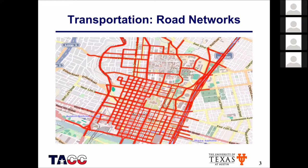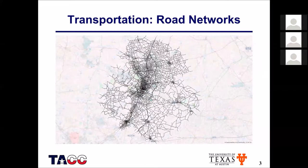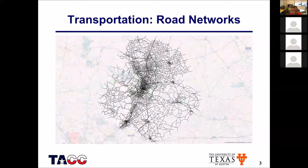This is what it might look like for the downtown Austin region — already fairly complex with all the subtleties we just talked about. For the entire Austin metro area, the road networks look even more complex. Running simulations for these city-size networks can get fairly time consuming.